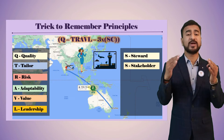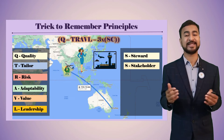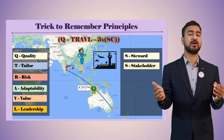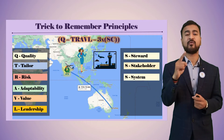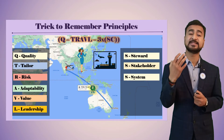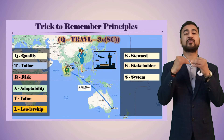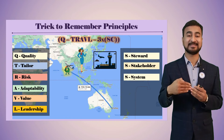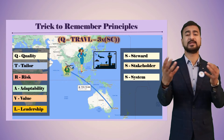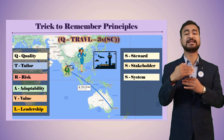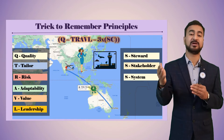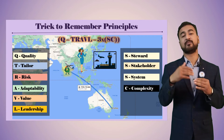Next is Stakeholders. In this journey from Sydney to Chennai, there are many stakeholders involved: passengers, airlines, air traffic controllers, and government regulations. The picture showing air traffic controllers and different airlines indicates a System — so System Thinking is required, considering all internal and external elements.